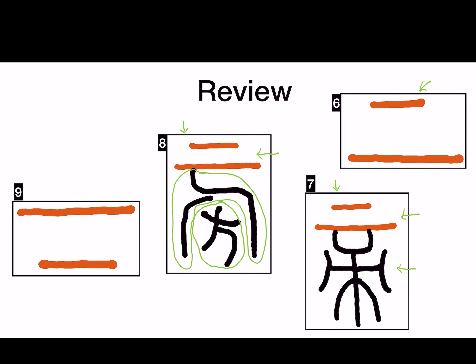Finally, the ninth character in the dictionary is an upside-down version of the sixth character. Recall that the sixth character means above, so if we turn above upside down, we get below. This character means below and is pronounced gra. So these are all the characters of the day. Thanks for watching, and see you next time.